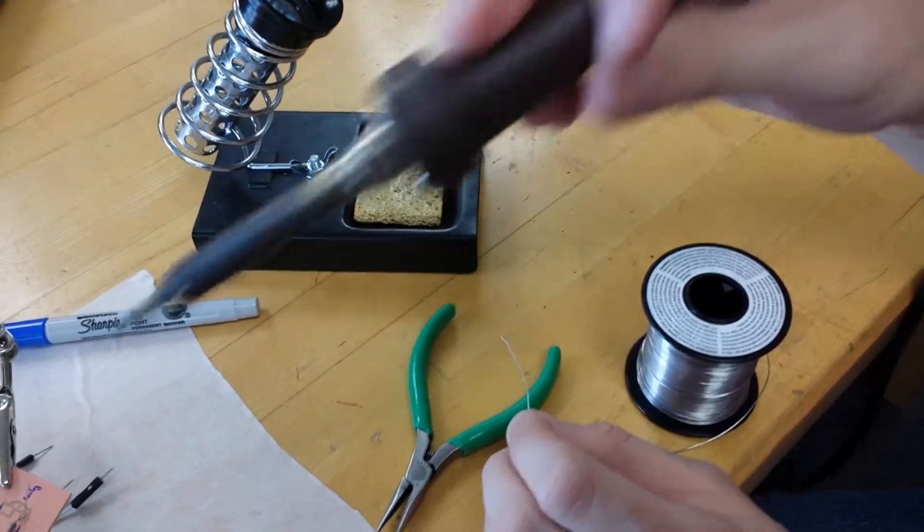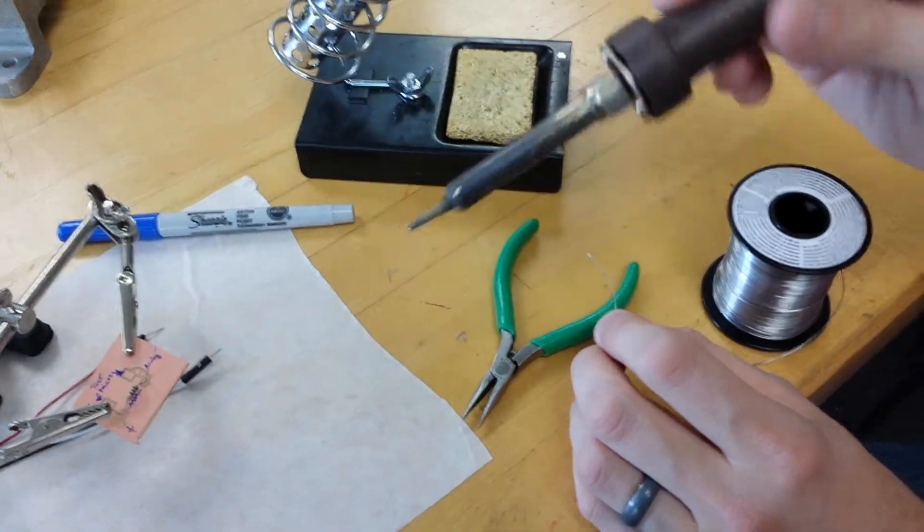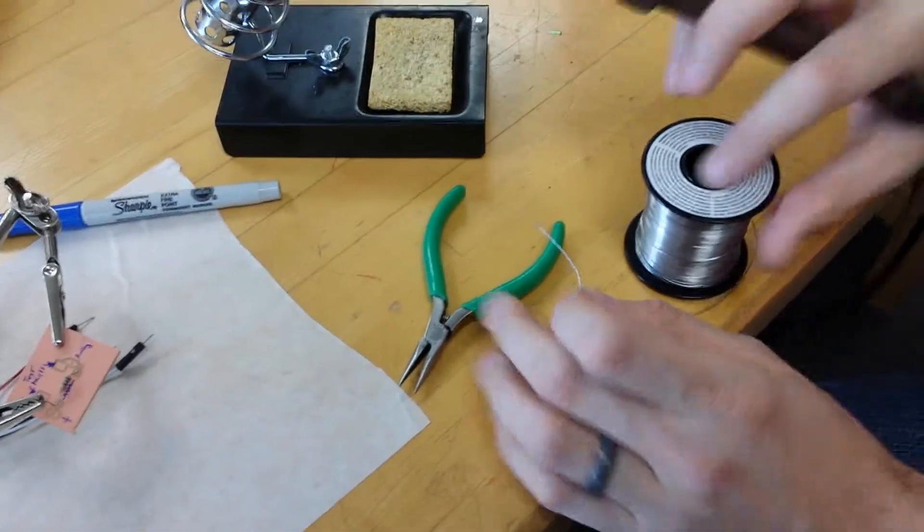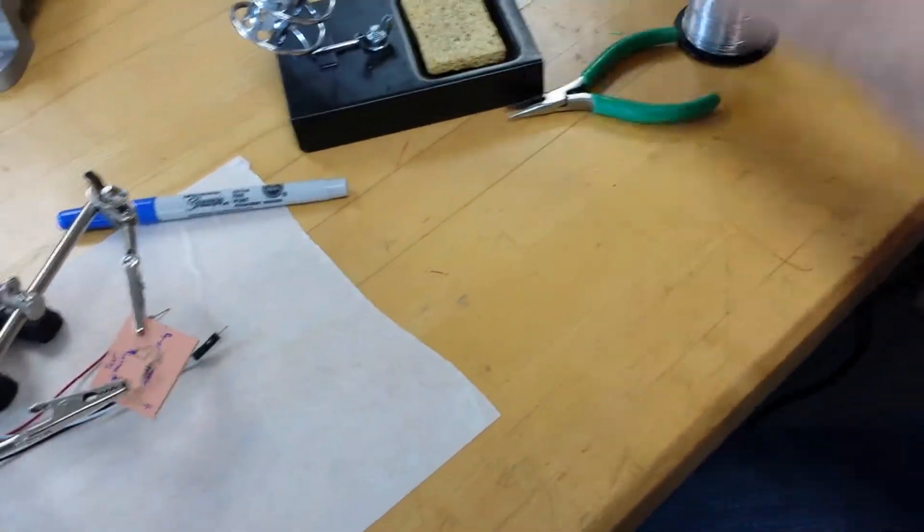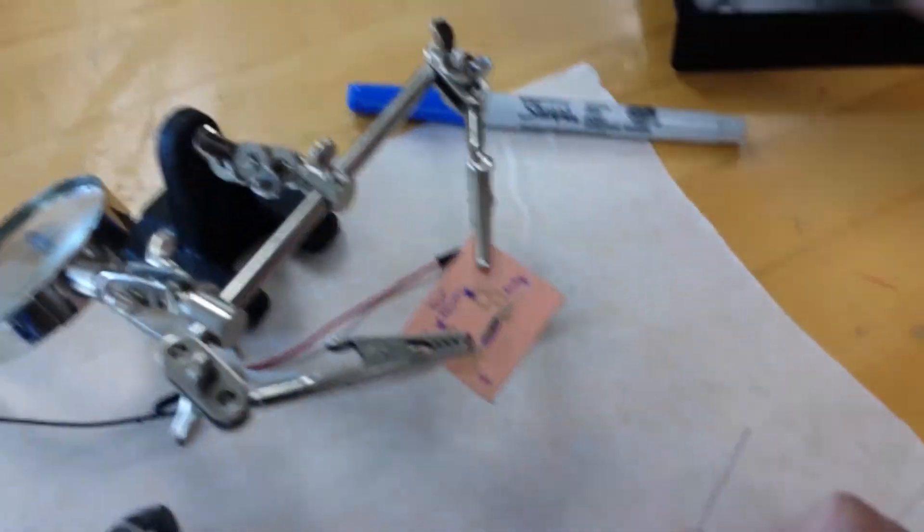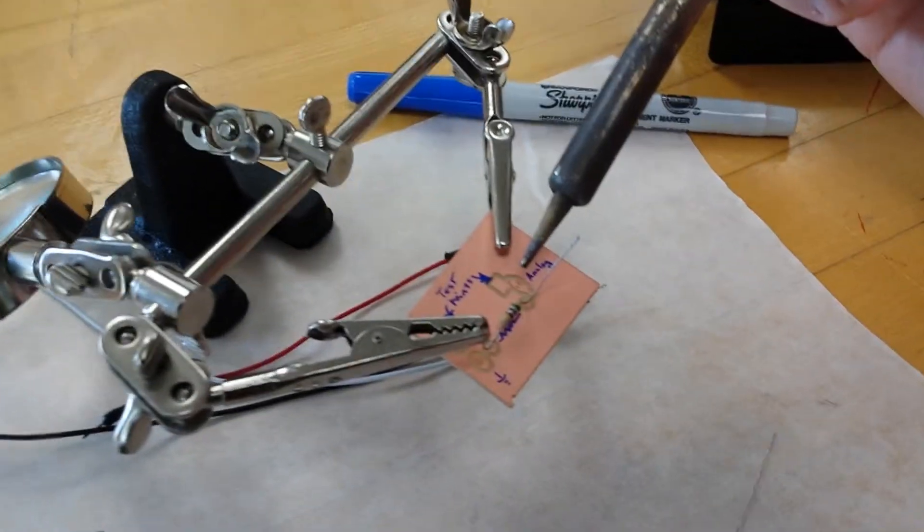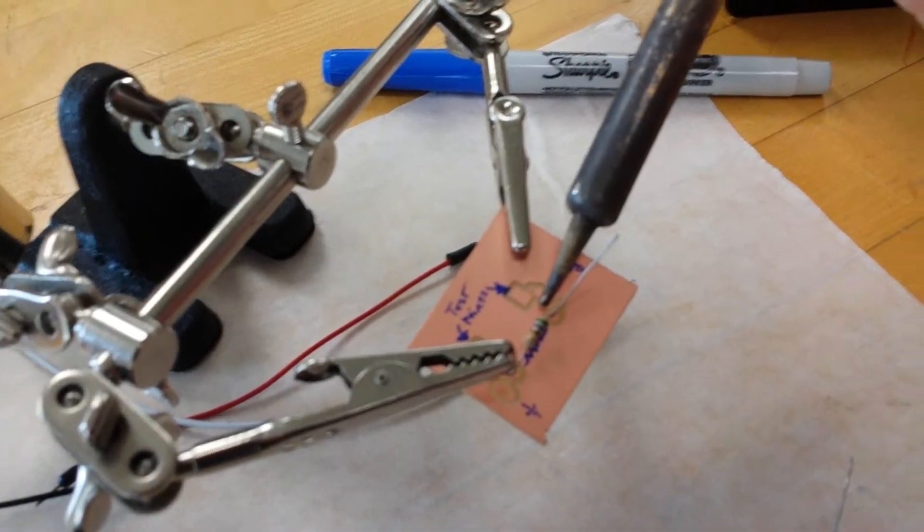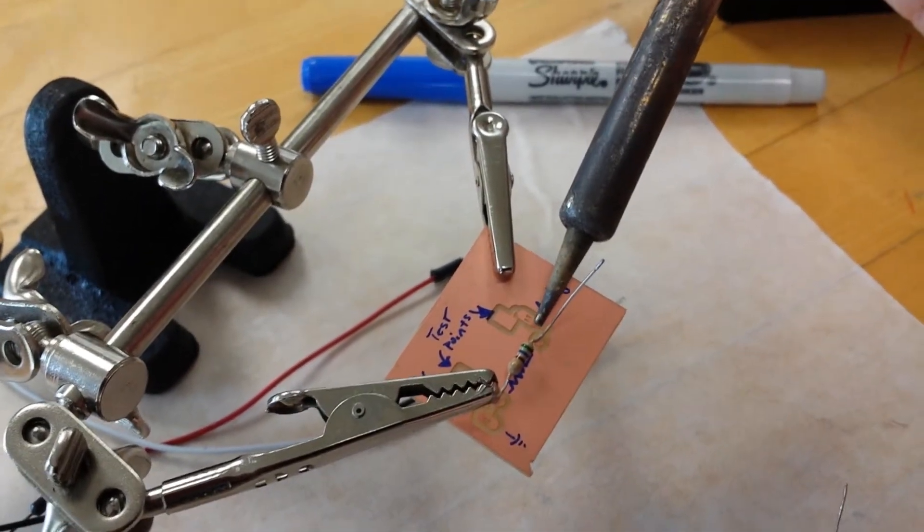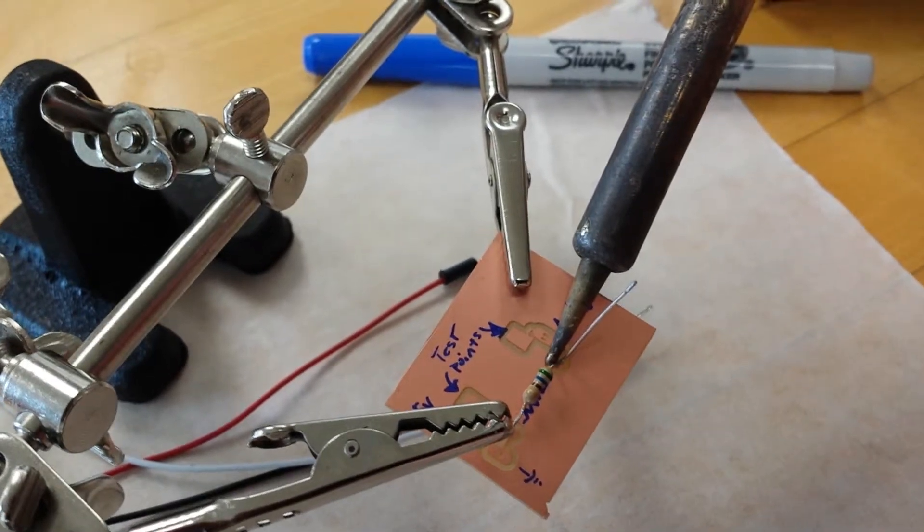Now do not put solder here and try to place it on the board. That will not work well. The way you solder is you apply the heat of the soldering iron to the junction. So if you see where the connection of where this bent resistor touches the pad, I'm going to apply heat right there.